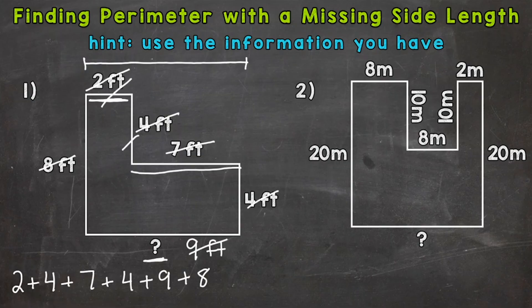And we can always double check to make sure we got everything. So one, two, three, four, five, six sides. And we have one, two, three, four, five, six measurements that we're going to add up. So we're good to go.